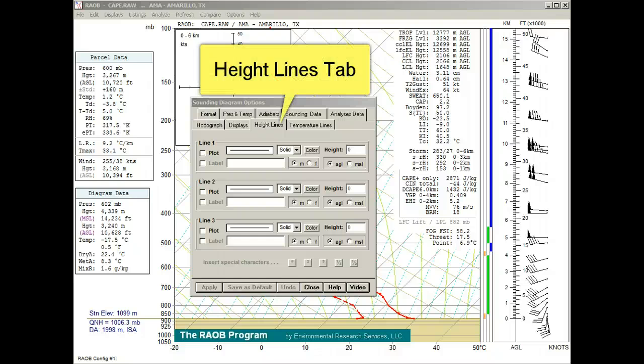The Height Lines Tab: here you can specify up to three unique horizontal height lines, where you can specify line type, color, labels, units in feet or meters, and an AGL versus MSL mode option.